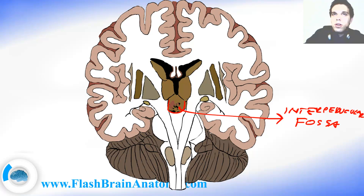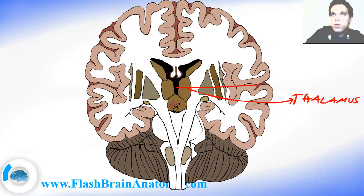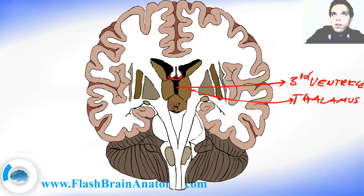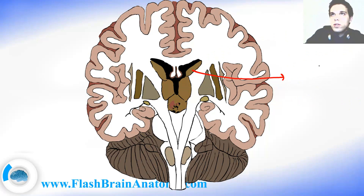Above the interpeduncular fossa we had the thalamus. Between the two thalami — from the right and the left side — there is the third ventricle. Then we had the foramen of Monroe connecting the ventricles. And of course we may not forget the lateral ventricle. The structure over here was called the caudate nucleus.